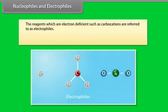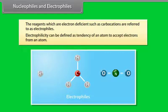The reagents which are electron deficient, such as carbocations, are referred to as electrophiles. Electrophilicity can be defined as the tendency of an atom to accept electrons from an atom.